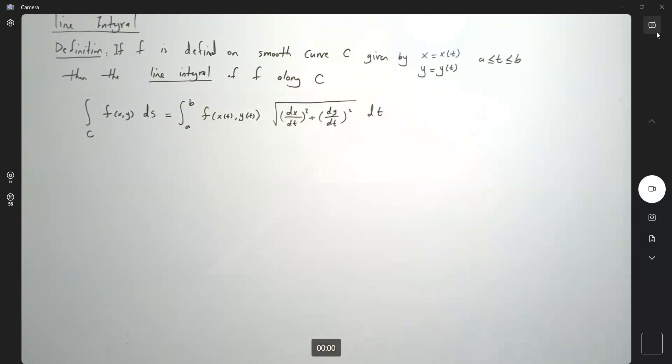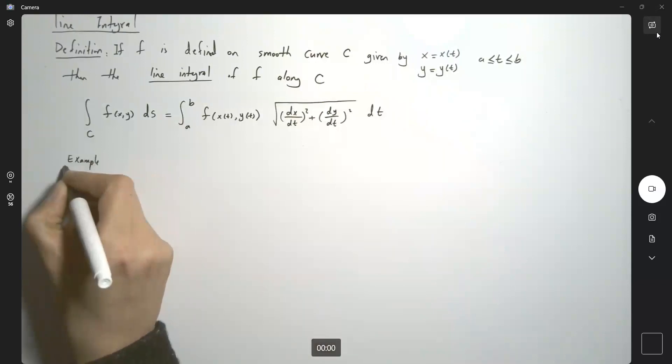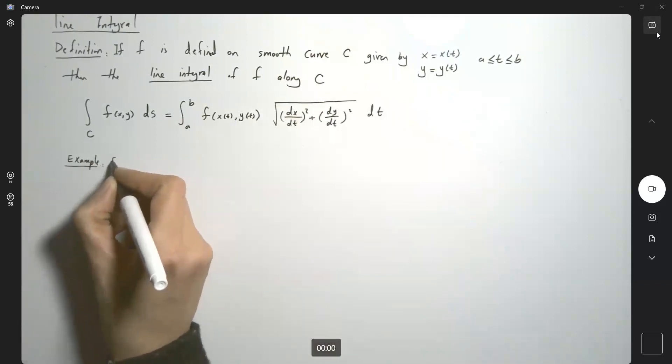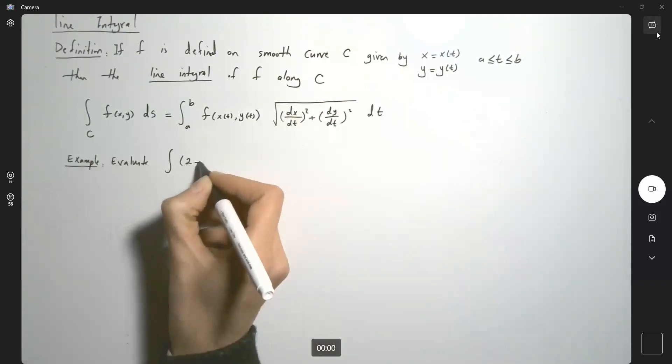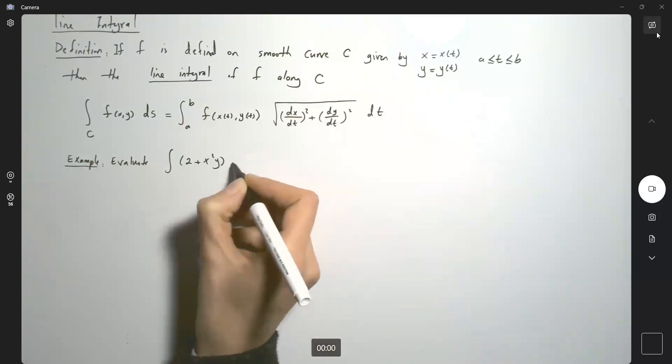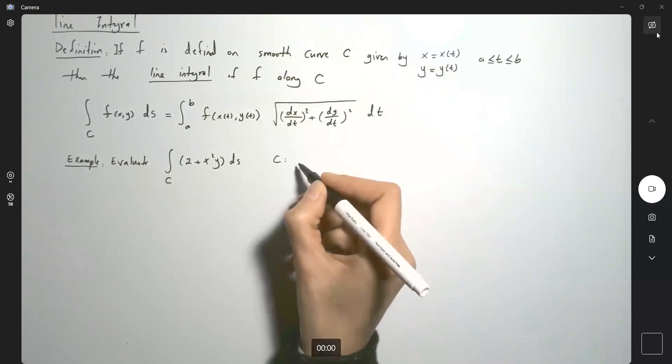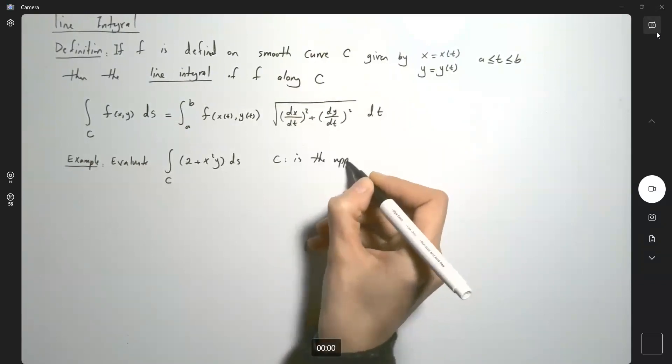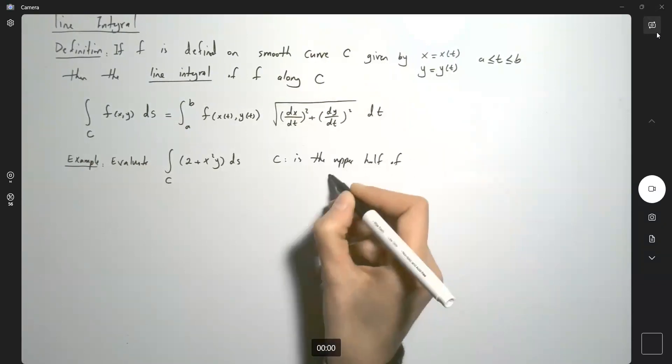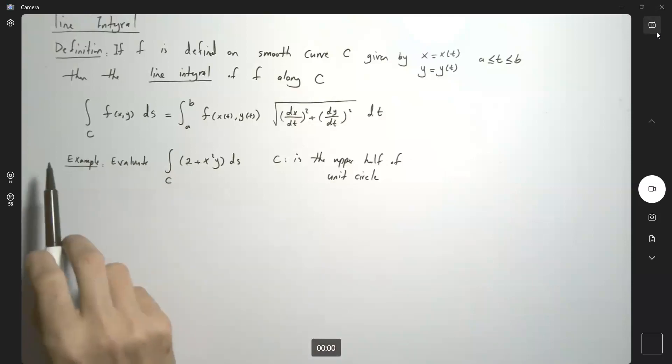Let's do an example. Evaluate the line integral of function 2 plus x²y along curve C, where C is the upper half of the unit circle.